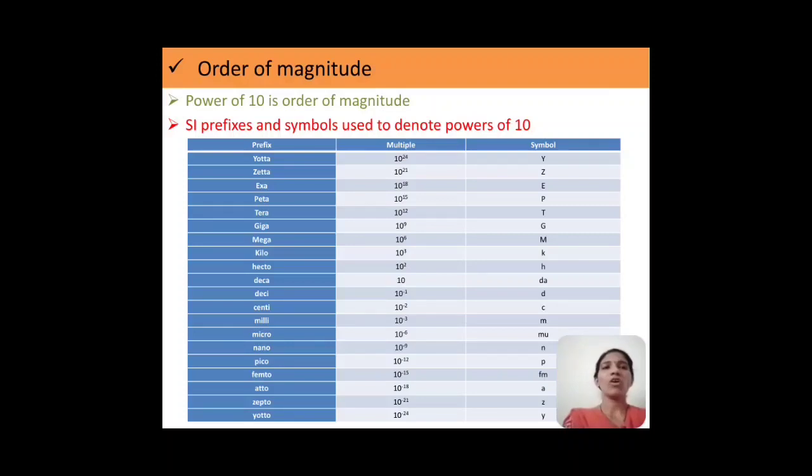Now we will go ahead with the order of magnitude. Order of magnitude is nothing but the power of 10, and each power will have certain SI prefixes. For example, we will start with 10 raised to 24, that is yotta, it is denoted by capital Y. Zeta is 10 raised to 21, capital Z. Exa is 10 raised to 18, capital E. Peta is 10 raised to 15, capital P. Tera, 10 raised to 12, capital T. Giga, 10 raised to 9, capital G. Mega is nothing but the power of 6, that is 10 raised to 6, and the symbol is capital M. Kilo is 10 raised to 3, K. Hecto is 10 raised to 2. Deca is 10.